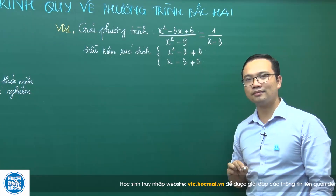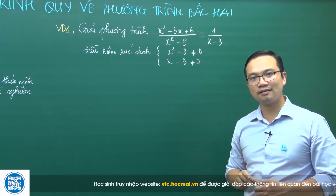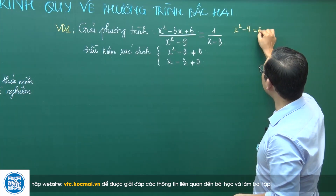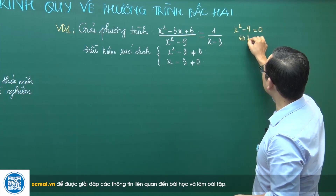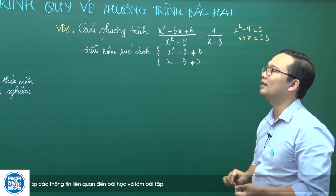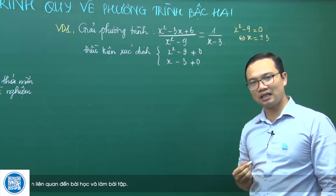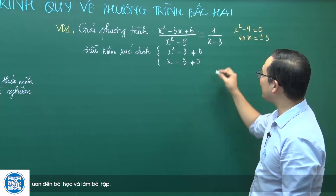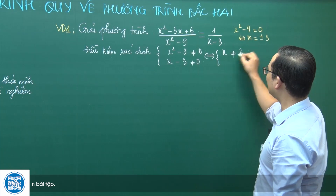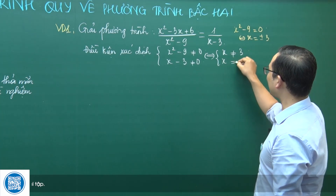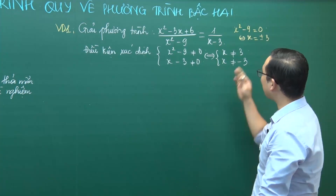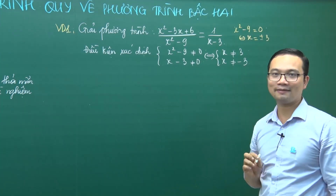x² - 9 ≠ 0 thì x phải khác 3 và x phải khác -3. Sau khi đặt xong điều kiện, chúng ta tiến hành quy đồng, đưa về mẫu chung. Phân tích x² - 9 = (x - 3)(x + 3) theo hằng đẳng thức A² - B² = (A - B)(A + B).